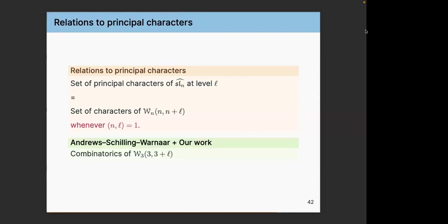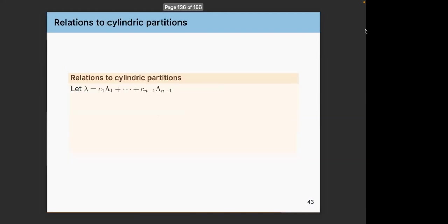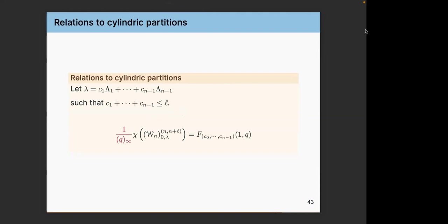Our work has to do with the combinatorics of the W_{3, 3+L} algebra. There is a general relationship between the characters of W-algebras and cylindric partitions — I have written it for W_N with the first parameter N equal to N, but there is actually a generalization of cylindric partitions covering all W_{N,T,Q} W-algebras, in the paper of Omar Foda and Trevor Welsh. This correspondence between characters and cylindric partitions is quite general.